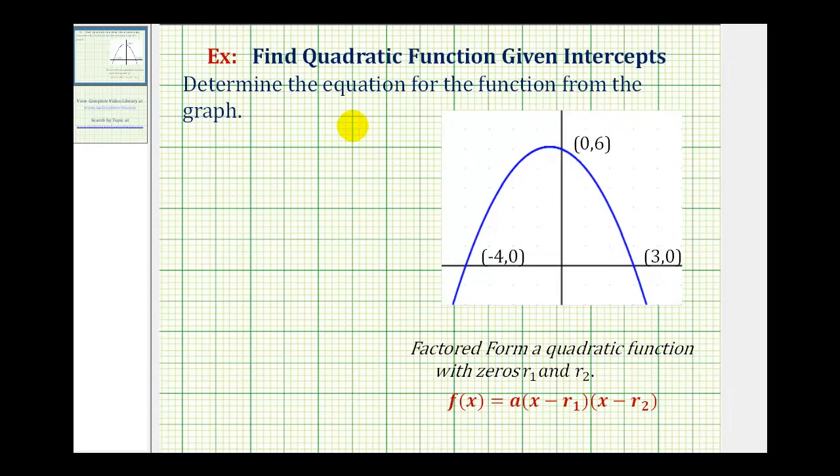In this problem, we're asked to find the quadratic function given the intercepts of the function. Because we're given the intercepts of our quadratic function, we're going to first find the function in factored form, and if we need to, we can multiply it out so that it's in general form.